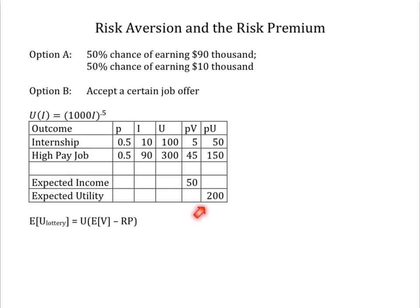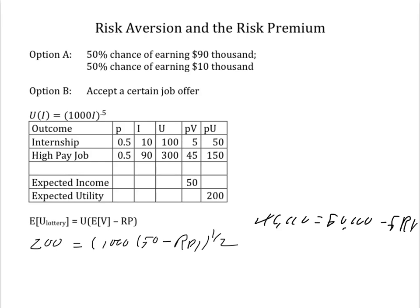Your expected income from going through the interview process is $50,000, generating an expected utility of $200,000. The risk premium in this case is the amount of income you'd sacrifice for peace of mind. So we want to compare $200,000 with the square root of $1,000 times ($50,000 minus the risk premium). That gives us $40,000 equals $50,000 minus 5RP, so RP equals $10,000. That is, you'd give up $10,000 in expected income for the certainty of having a job that yields an income of $40,000.